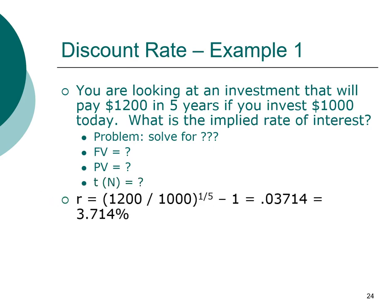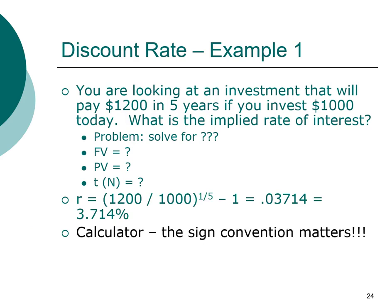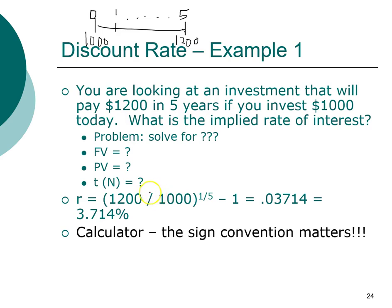If you use the financial calculator, you need to remember the sign convention. Looking at our timeline, the cash flows don't yet indicate which is an inflow and which is an outflow — that's because signs don't matter when using the formula. But for the financial calculator, they are very important. Typically, I'll make the present value the outflow, entering it as negative, indicating we're putting aside $1,000 and getting back $1,200.